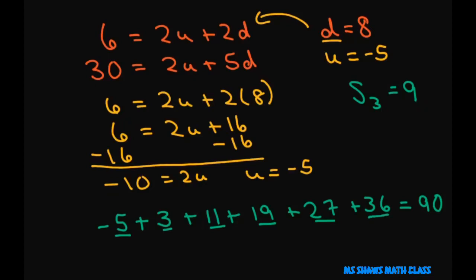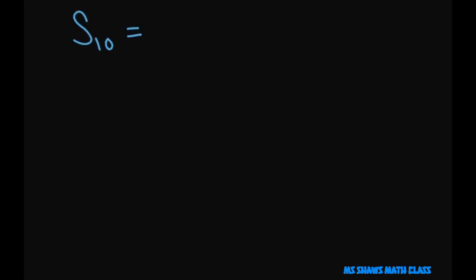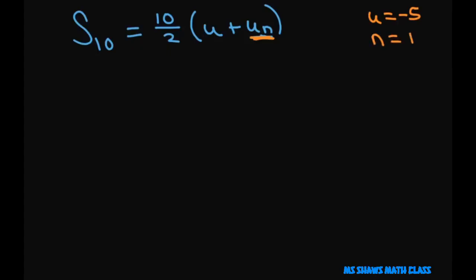Now they want the sum of the first ten terms. We need to find the 10th term first. The formula is S sub 10 equals 10 divided by 2 times the first term plus u sub n, our last term. Our first term is negative 5, n is 10, but we don't yet know u sub n. So we can write this as 5 times negative 5 plus u sub n.